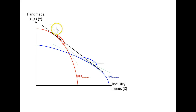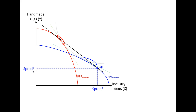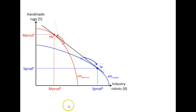If we draw one straight line tangent to both production probability frontiers, the cost of producing one more industry robot expressed in handmade rugs will be equal in both countries. In Sweden, the production point SP shows we produce that amount of industry robots and that amount of handmade rugs — definitely increased production of industry robots and decreased production of handmade rugs compared to the autarky situation. In Morocco, the production bundle similarly shows that much of each good.